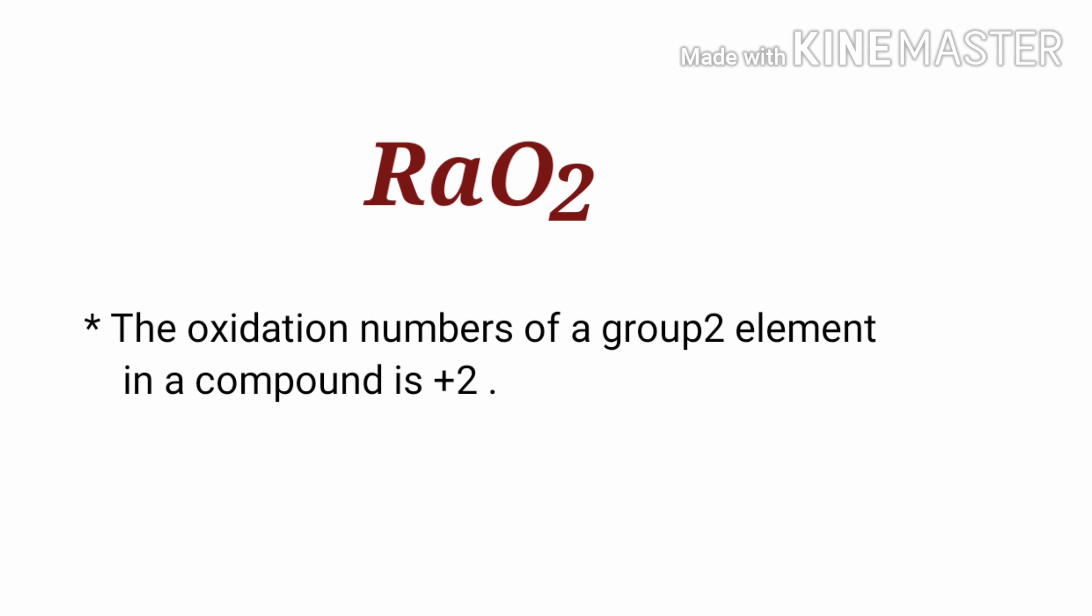By the rules of assigning oxidation numbers, the oxidation number of a group 2 element in a compound is +2. Radium is a group 2 element, so the oxidation number of radium is +2. We can write the oxidation number of the element above its symbol and the total number of the oxidation number of the atoms below its symbol.